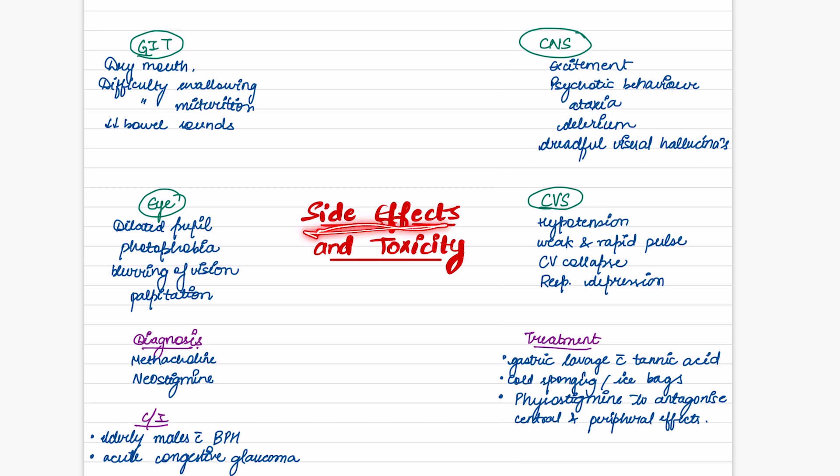What are the side effects and toxicity of atropine? In GIT: if secretions are reduced, then dry mouth, difficulty swallowing, difficulty in micturition, and decreased bowel sounds. In the eye: dilated pupil, photophobia, blurring of vision, and palpitations. In CNS: excitation, psychotic behavior, ataxia, delirium, and dreadful visual hallucinations. In CVS: hypertension, weak and rapid pulse, cardiovascular collapse, and respiratory depression.